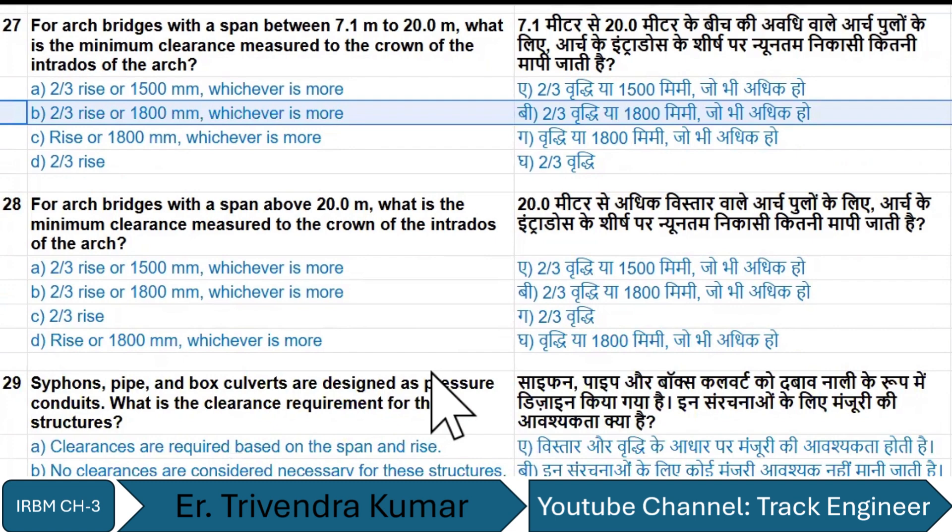For arc bridges with a span above 20 meters, the minimum clearance measured to the crown of the intrados of the arch is two-thirds rise.